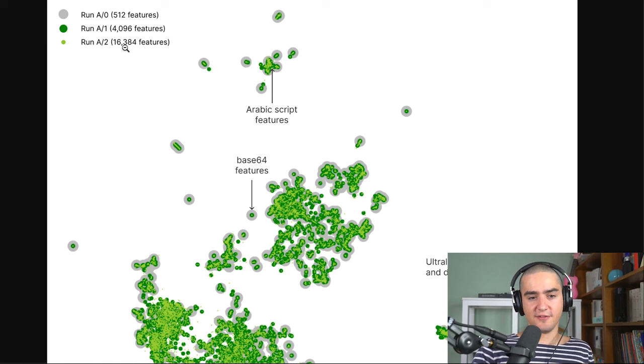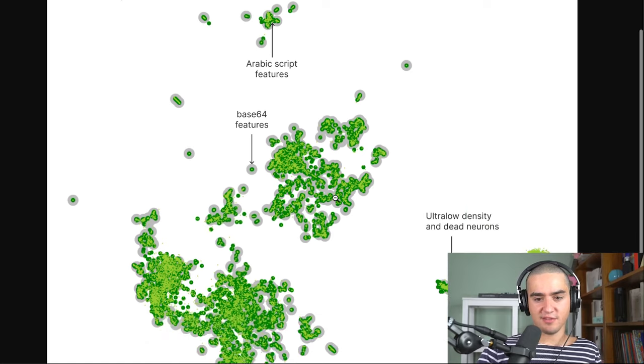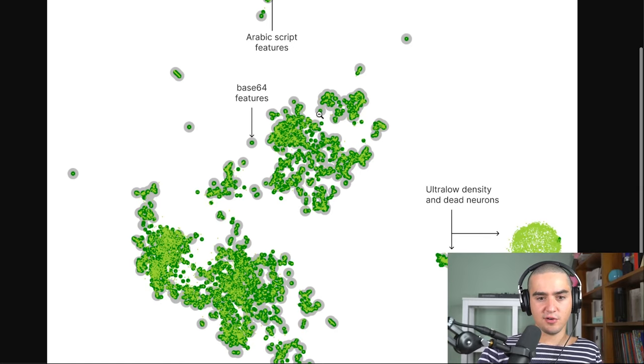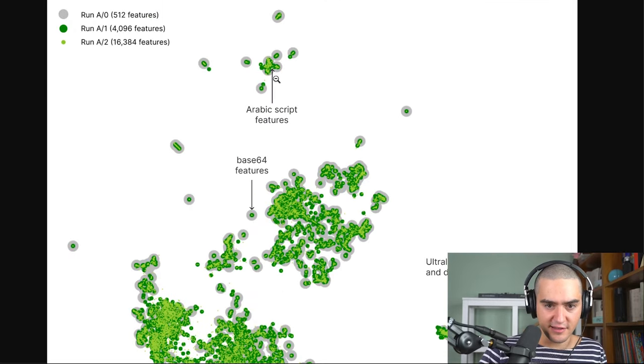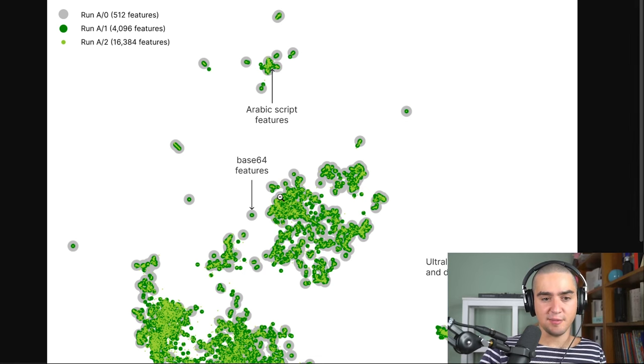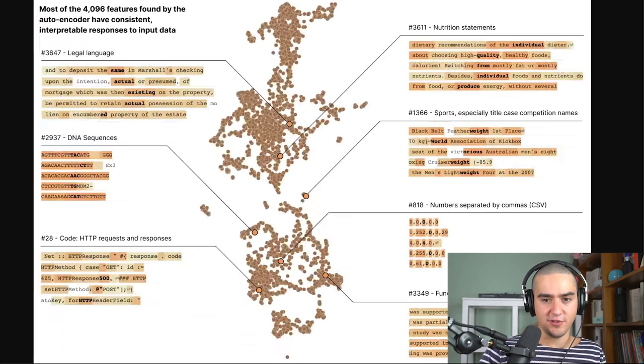And so the more features you have, the more granular your clusters will be, like the smaller they will be. And so for instance, they have these things with Arabic script features or basic C4. And so if you zoom in, you can actually see that those clusters, they break out into smaller clusters. So the A0 break out into smaller A1, that break out into smaller A2. So this is very exciting because it means that you can get more granularity as you increase number of features.